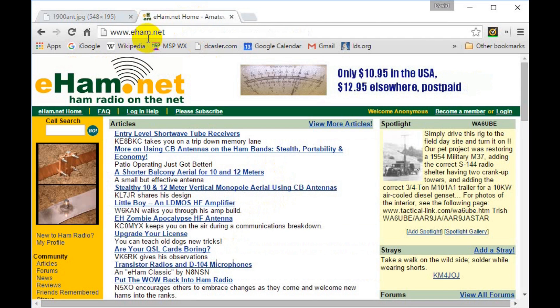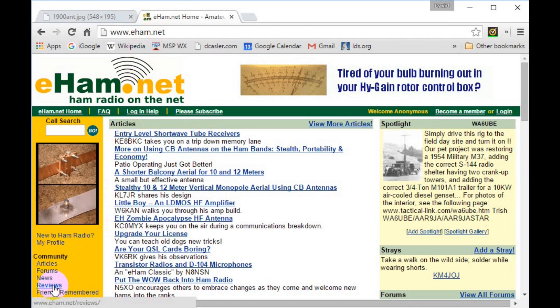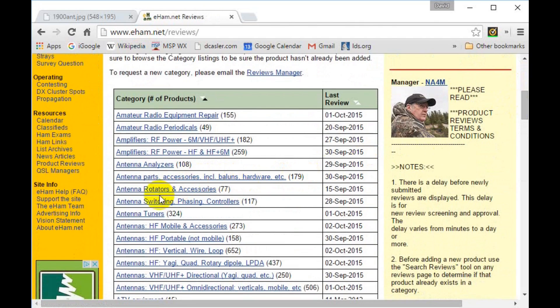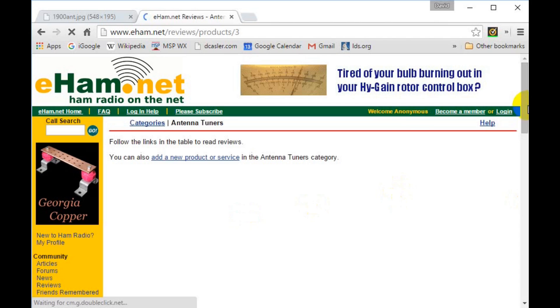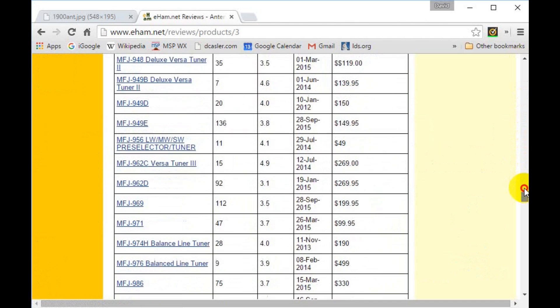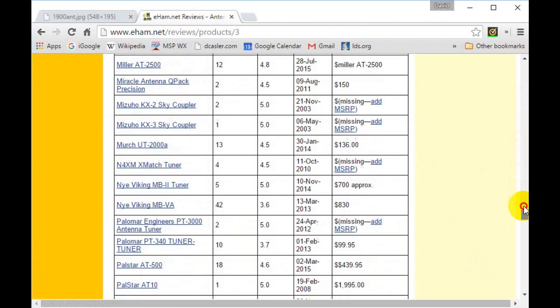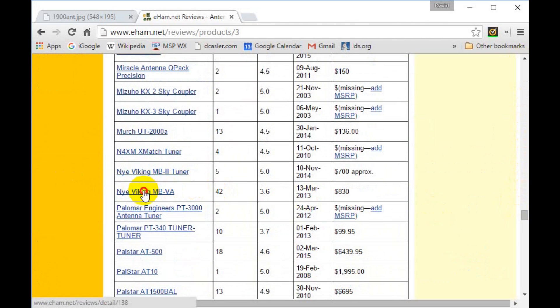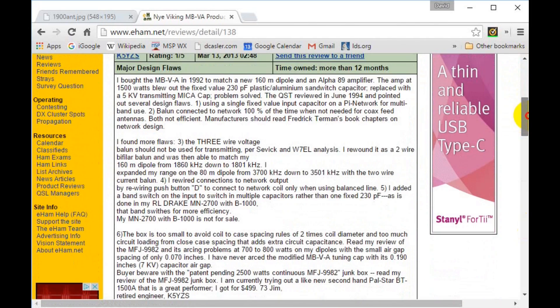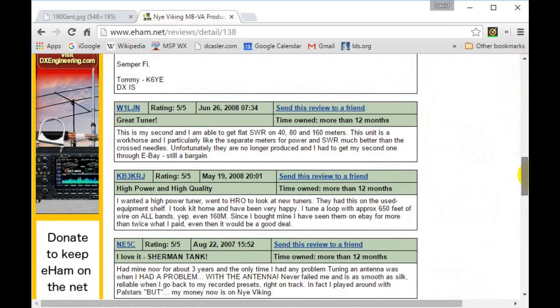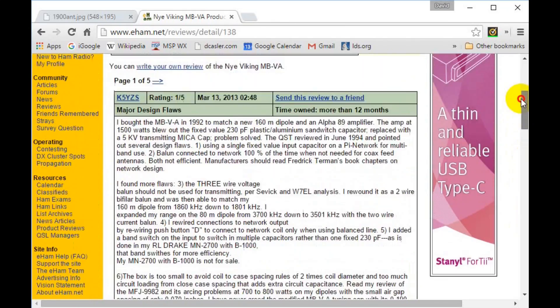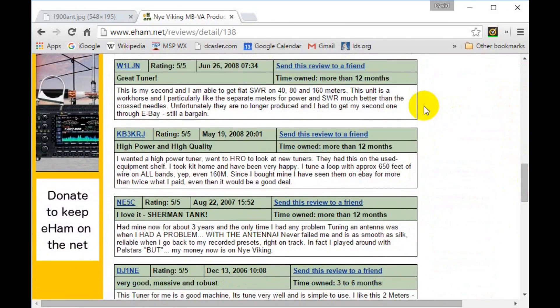There's a great site called eham.net. In the right-hand column, click on reviews. Now click on antenna tuners. Let's scroll down a bit. Here's the Nye Viking MB-5A tuner. There are 42 reviews with an average rating of 3.6 out of 5. Let's click through. Here you see individual reviews. These are not lab quality tests, but rather are individual hams' experiences. You can read through these reviews and decide which pertain to your situation.